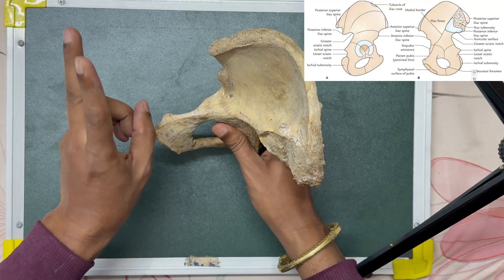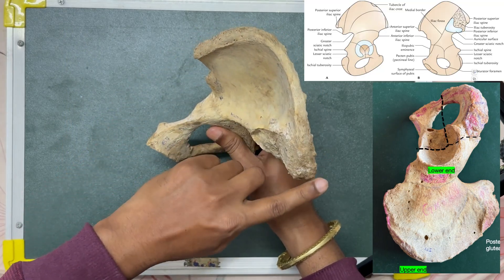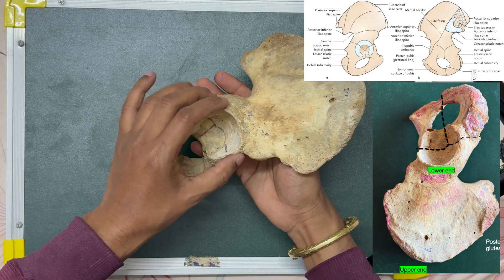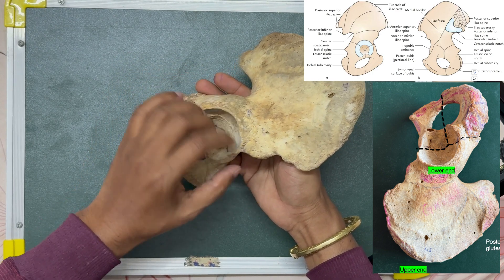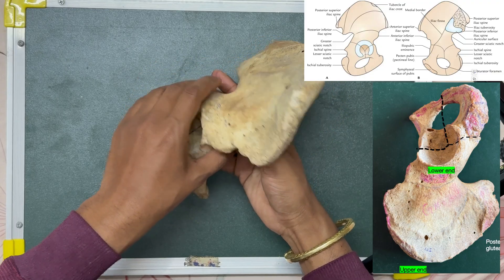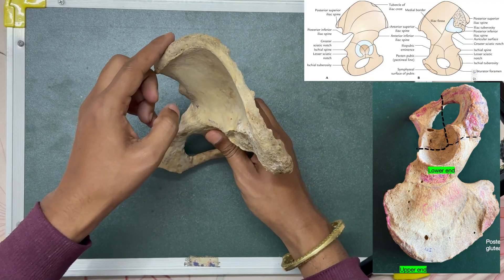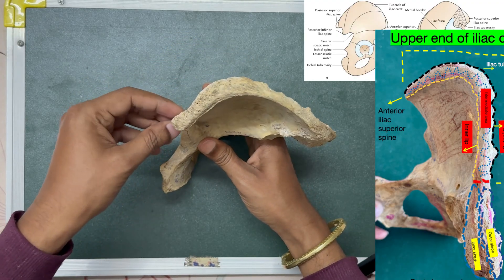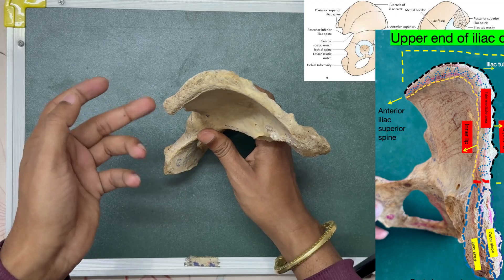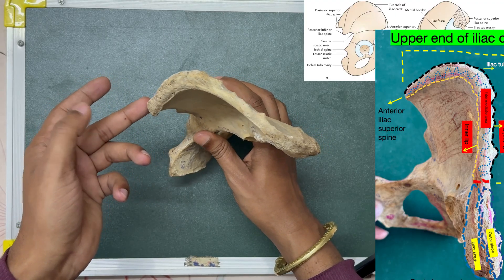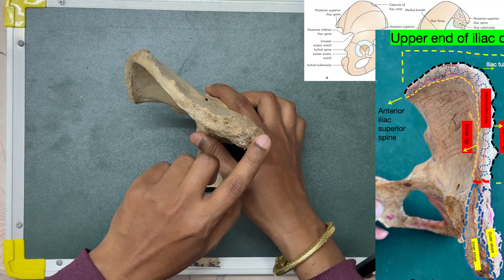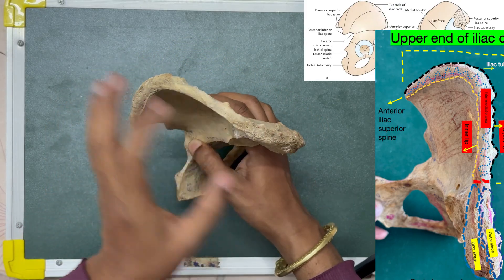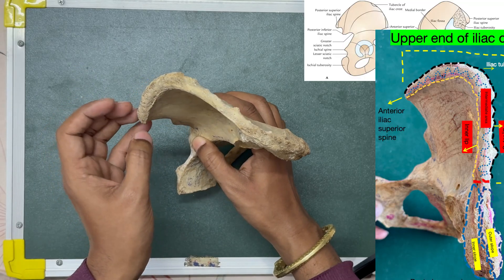The ilium consists of two ends: the upper end and the lower end. Near the acetabulum, the junction between ilium, ischium, and pubis takes place — this is the lower end forming part of the acetabulum. The upper expanded end is thick to form the iliac crest, which extends from the anterior superior iliac spine to the posterior superior iliac spine.